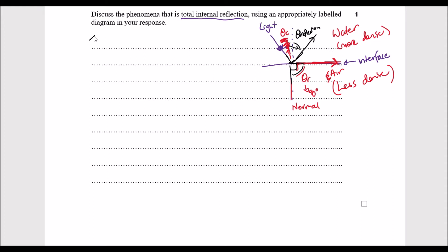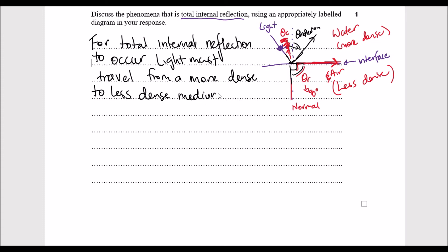So firstly, for total internal reflection to occur, our light ray must travel from a more dense to less dense medium.